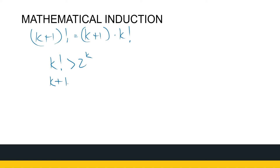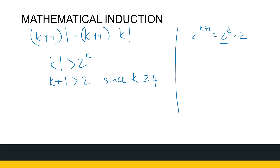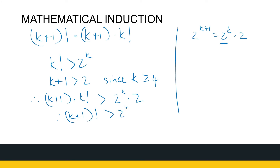What do I know about k+1? We're trying to get to 2^(k+1), which equals 2^k times 2. So I can relate to 2^k, but what about the factor of 2? Can I say k+1 is greater than 2? I can, because k is greater than or equal to 4. Therefore, the product of (k+1) and k factorial must be greater than the product of 2^k and 2. Therefore, (k+1) factorial is greater than 2^(k+1).